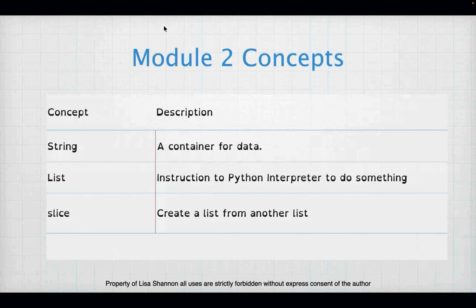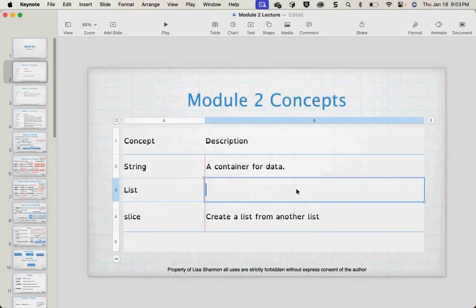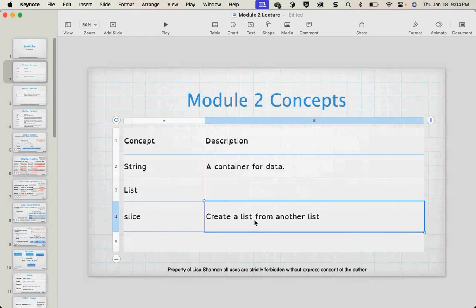We have some new concepts. A string is another type — it's a container for data, and in this particular case it is a container for alphanumeric — more than alphanumeric actually — characters in a sequence. A list is a collection of any data in a sequence, and a slice is a way of creating a list from another list, or a string from another string.